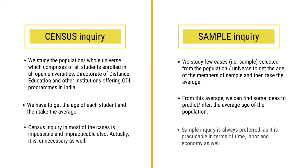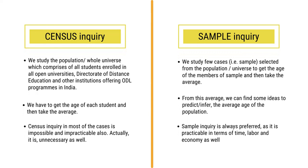Maybe the open universities, direct rate of distance institutions, and other ODL institutions. We have to take each and every student, take their average, and find the conclusion. Whereas in case of sample enquiry, we take a selected sample out of the population — the sample that will rightly represent the whole population. From this average, we can find out the idea and we can predict and infer about the age of the population. Sample enquiry is always preferred; it is practicable in terms of labour, economy, and time as well.